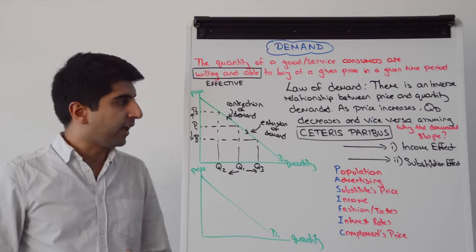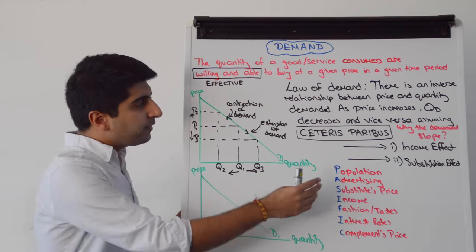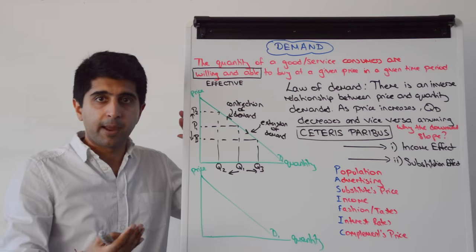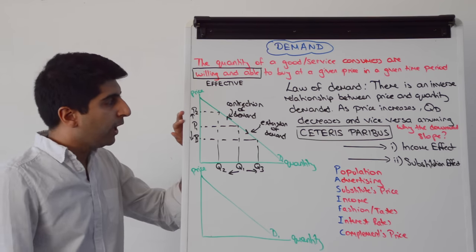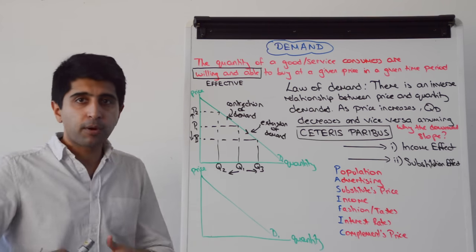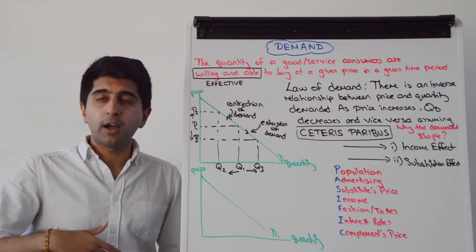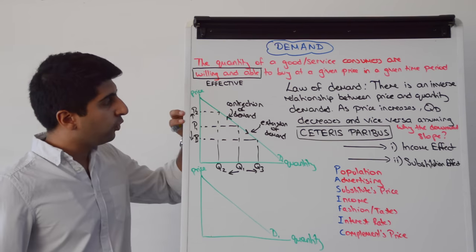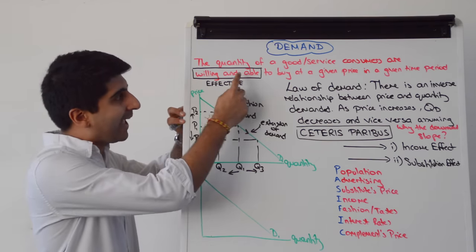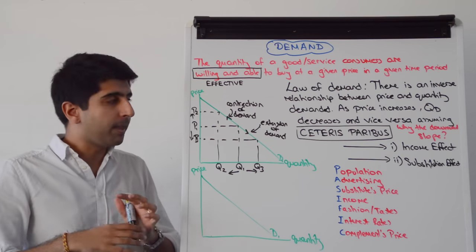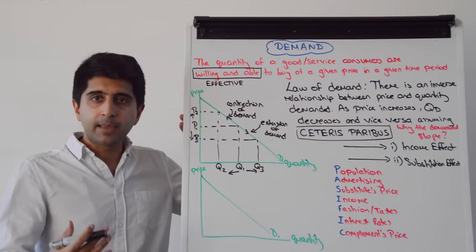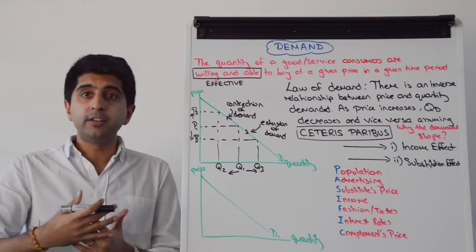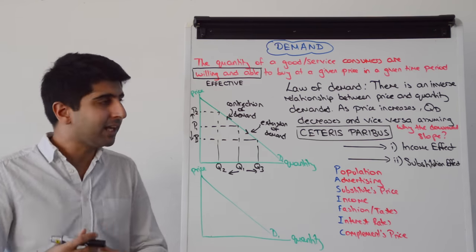Let's take a price increase in both cases. How does the income effect explain that when prices go up, there is a contraction of demand? Very simply, as prices go up, our income can't stretch as far — the purchasing power of our income decreases. Therefore, we are less able to buy the same quantity of goods and services as before, so our demand contracts.